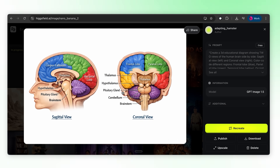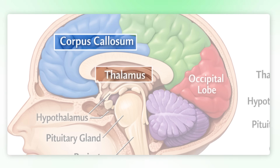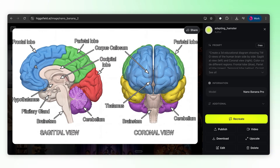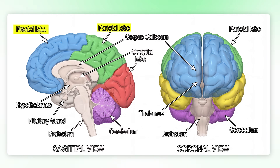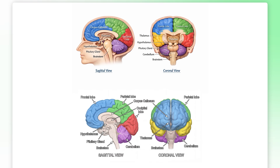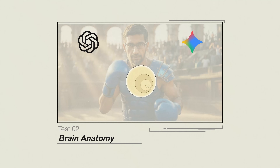GPT gives us a textbook style, clean layout. I like the facial profile — helps with orientation. Are the labels correct? Corpus callosum, thalamus, hypothalamus, pituitary, brainstem — all pointing to the right places. Nano goes for a different style — clean 3D render, more modern aesthetic. Labels: frontal, parietal, corpus callosum, thalamus, hypothalamus, brainstem — also correct. Both are anatomically accurate, no mislabeled structures. A student could use either without learning something wrong. GPT went textbook with facial profile and clear hierarchy; Nano went 3D aesthetic but with no anatomical context. For an educational diagram, that context matters. GPT Image 1.5 takes round 2. We're tied, 1-1.